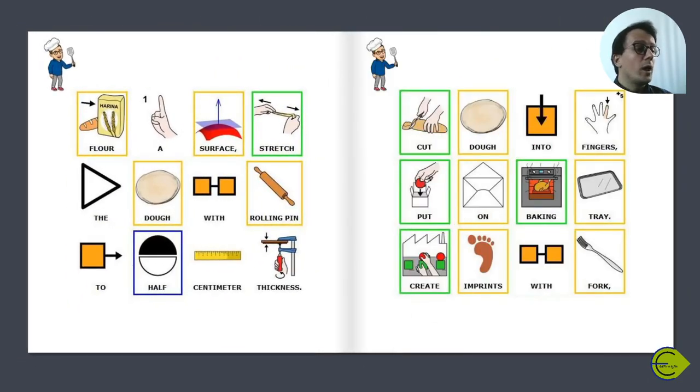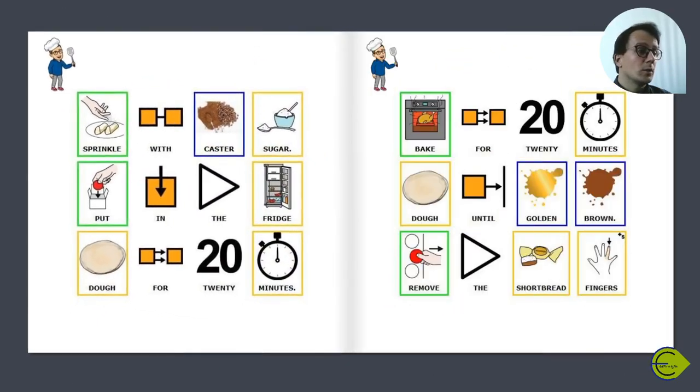Flour a surface and stretch the dough with a rolling pin to 1.5 cm thickness. Cut the dough into fingers and put on a baking tray. Create imprints with a fork, sprinkle with caster sugar, and put in the fridge for 20 minutes. Then bake for 20 minutes.